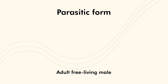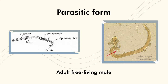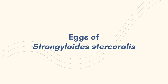The adult male is shorter and broader than the female worm. The adult male has no penetrating power and remains in the lumen of the large intestine. Males differ from females by possessing spicules and gubernaculum.